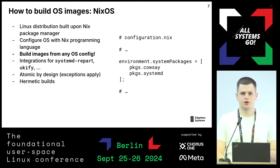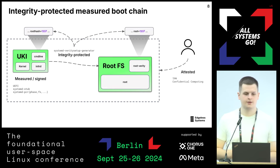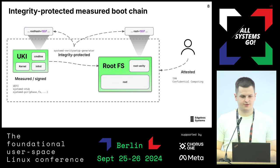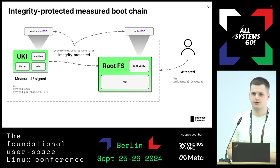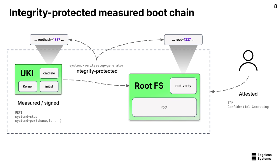Now let's talk about a general, opinionated framework for how immutable OS images can or should look. This applies not only to NixOS but is a general good scheme for building simple immutable systems with a protected boot chain. If we protect the boot chain, we can bootstrap trust into our system. If the machine has booted the correct things with the correct files — and we protect the root file system — we can later verify the system and establish trust, then provide it with keys from a KMS.